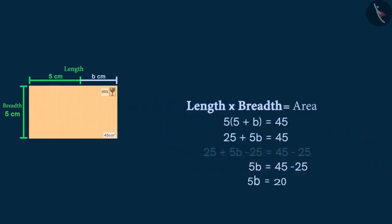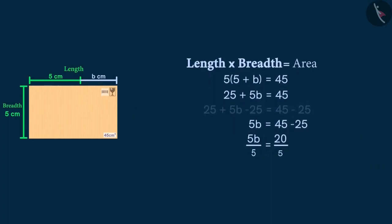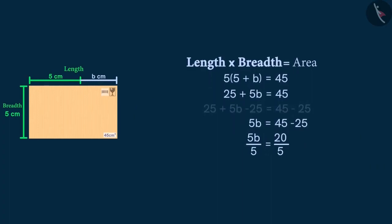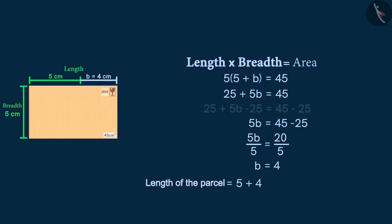Now, we will divide both sides of the equation by 5 to get the value of b. On doing so, we see that the value of b turns out to be 4. Now, we know the length of the parcel is equal to 5 plus b. So, that means the length of the parcel is 5 plus 4, which is 9 cm.